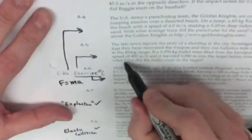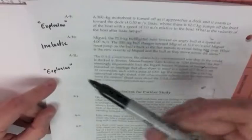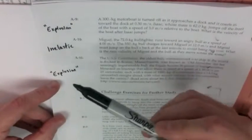In A7, you're looking at an explosion type of situation. And in A8, you're looking at an elastic collision. A9 is going to be an explosion style. A10 is going to be inelastic, and A11 is explosion.